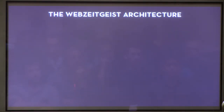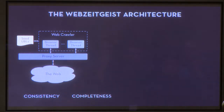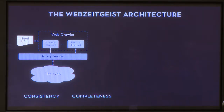The Web Zeitgeist architecture is based on four design principles. The first is consistency. We all know that the web is dynamic, but machine learning applications expect data to remain unchanged between accesses. So Web Zeitgeist stores static snapshots of page designs. The second is completeness. Web Zeitgeist is intended to be a general design mining platform, so if an application needs a particular piece of data, Web Zeitgeist should provide it. Web Zeitgeist saves all the resources and properties that contribute to a page's visual design.